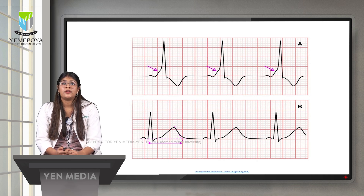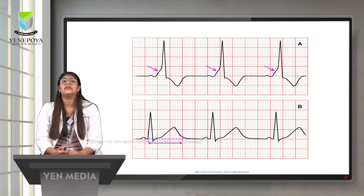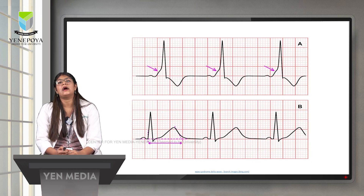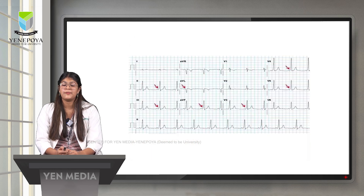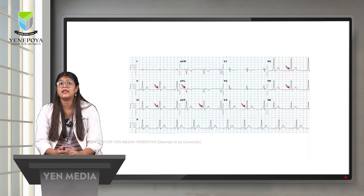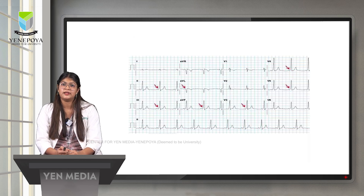Here is another example showing the initial abnormal slurred upstroke — the delta wave — and the very short PR interval, confirming the presence of the delta wave in the initial upstroke and the short PR interval characteristic of WPW syndrome.